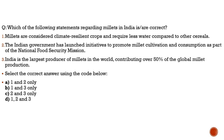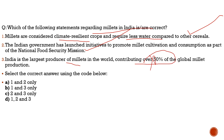The next question is about millets in India. Statement 1: Millets are considered climate-resilient crops and require less water compared to other cereals — 100% correct. Statement 2: The Indian government has launched initiatives to promote millet cultivation and consumption as part of the National Food Security Mission — 100% correct. Statement 3: India is the largest producer of millets in the world, contributing over 50% — this is totally incorrect. India is one of the largest producers but does not contribute over 50%. So the correct statements are 1 and 2 only.